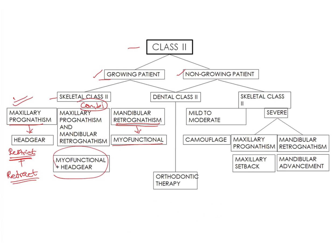If the patient is a non-growing or adult patient with a skeletal Class II, it depends whether the Class II is mild to moderate or severe. For mild to moderate skeletal Class II, we can do camouflage — orthodontic therapy with extractions to camouflage the skeletal discrepancy. If it is very severe such that even camouflage cannot be done, then we perform orthognathic surgeries: a maxillary setback surgery for maxillary prognathism, or mandibular advancement surgery for mandibular retrognathism.